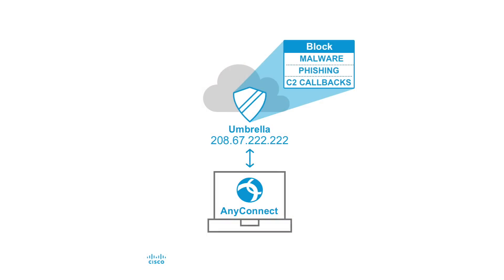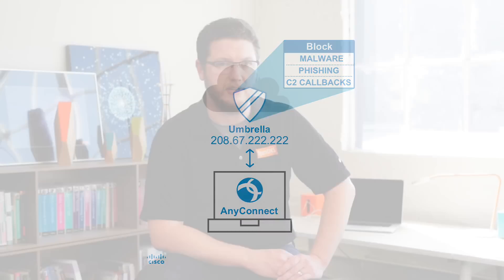We've taken something that's ubiquitous — it's probably installed on all your laptops already — AnyConnect, and we've combined it with the Umbrella Roaming Client to give you effective security, no matter where your endpoints are, without requiring another agent.